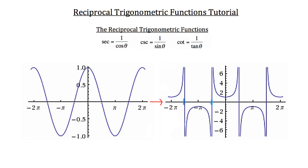Each of these parabolas occurs within a period of pi. So instead of a period of 2 pi for each cycle, each cycle occurs within a period of pi. The boundaries of that period are denoted by asymptotes — lines going straight up — which the parabolas approach but never touch.